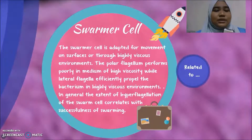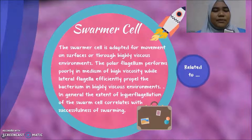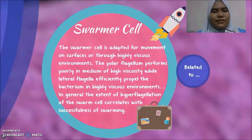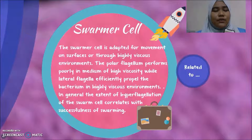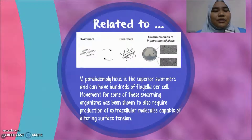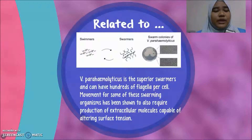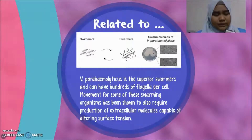Next, it is a swarmer cell. The swarmer cell is adapted for movement on surfaces or through highly viscous environments. The polar flagellum performs poorly in media of high viscosity, while lateral flagella efficiently propel the bacterium in highly viscous environments. In general, the extent of hyperflagellation of the swarmer cell correlates with the successfulness of swarming. Vibrio parahaemolyticus is a superior swarmer and can have hundreds of flagella per cell. Movement in some swarming organisms also requires production of extracellular molecules capable of altering surface tension.